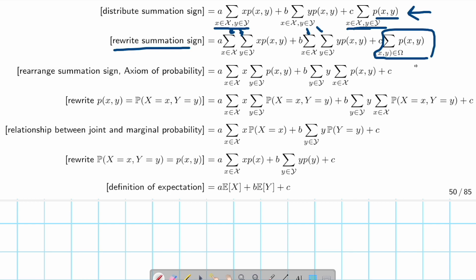the sum of all probability in a sample space is one. So this whole thing reduced to one, and one time c gives us c. So this is how we get the c.